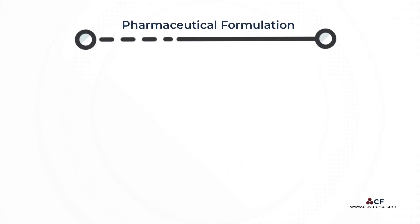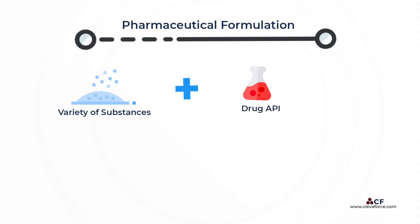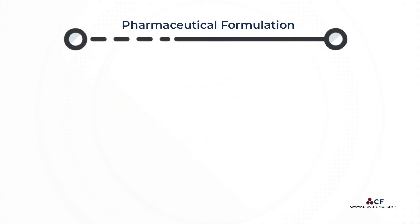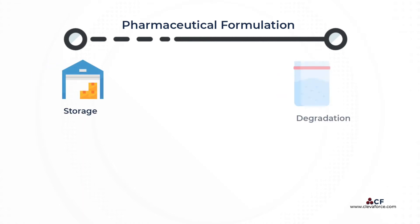Pharmaceutical formulation is the process through which a variety of substances are combined with the drug's active pharmaceutical ingredient (API), or drug substance, to produce a drug product that can be successfully given to patients. During this process, the influence of formulation variables on potential critical quality attributes are studied, including upon intended storage, accelerated, and forced degradation conditions.